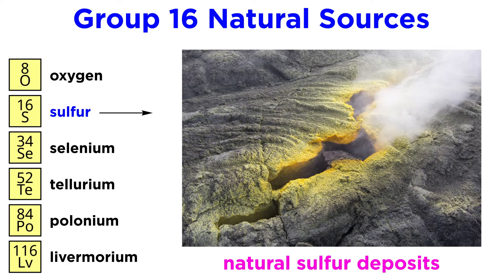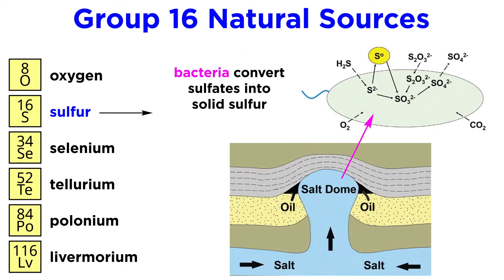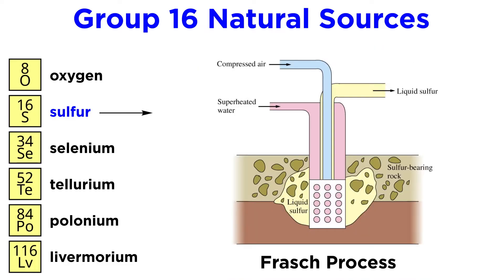Sulfur has historically been found in natural deposits near volcanoes and geothermal vents, and is easy to mine. Sulfur is also found under geological salt domes, where sulfates are converted to solid sulfur by bacteria. This can be melted by steam and pumped to the surface through pipes, which is called the Frasch process, and it yields extremely pure sulfur.